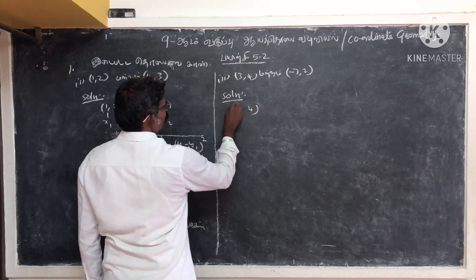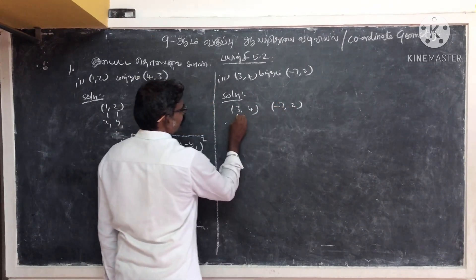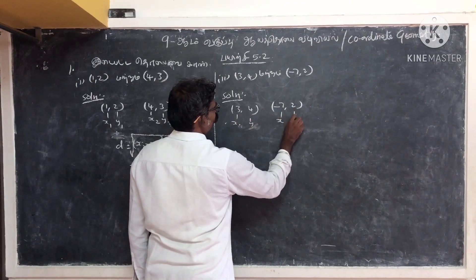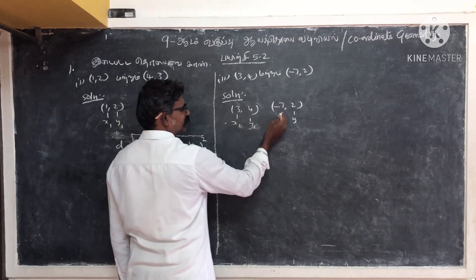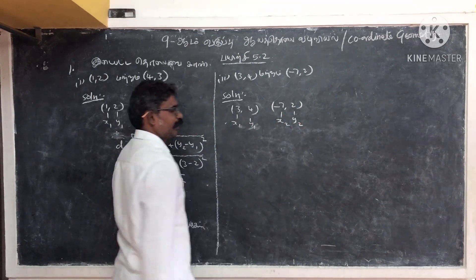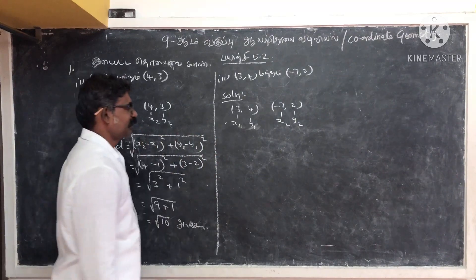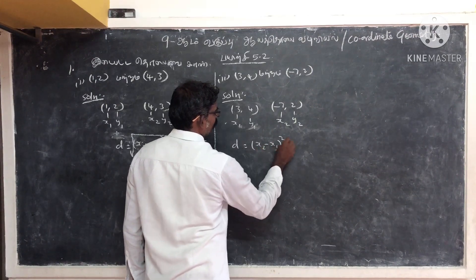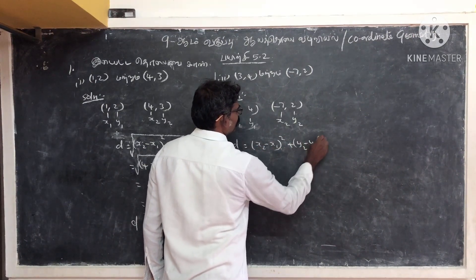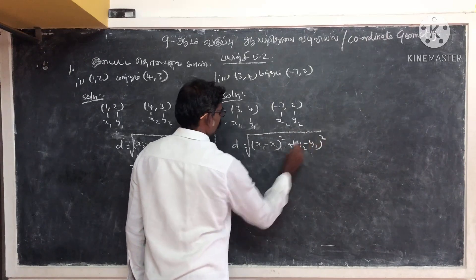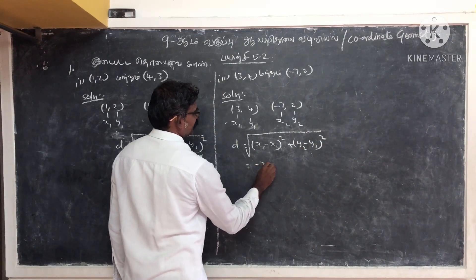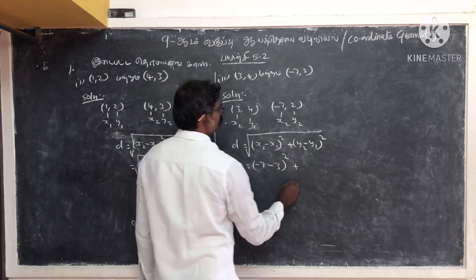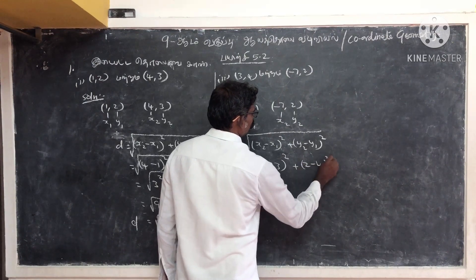Now the points are (3,4) and (minus 7, 2). This is x1, y1 and this is x2, y2. First: x1, y1. Second: x2, y2. Let us find the distance using the formula. The formula is the square root of (x2 minus x1) the whole square plus (y2 minus y1) the whole square. What is x2 here? Minus 7 minus 3 the whole square. What is y2? 2 minus 4 the whole square.